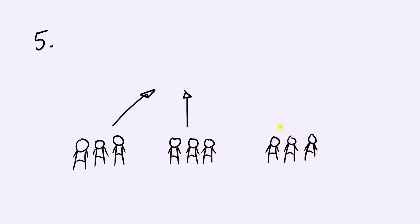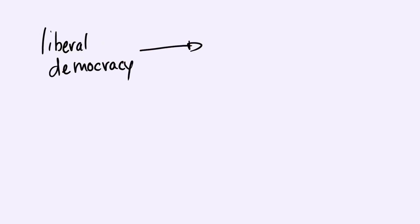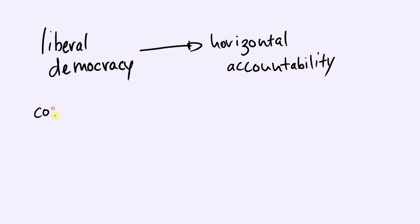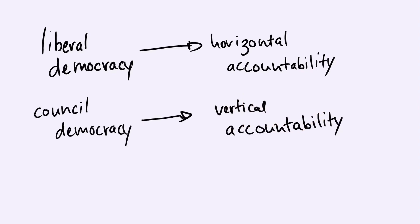This system drastically redefines the democratic process in comparison to its liberal counterpart. Liberal democracies rely heavily on what is known as horizontal accountability, which is what most Americans might understand as a checks and balances system and a separation of powers. Indeed, council democracy abandons horizontal accountability by eliminating the separation of powers — the ability of distinct branches of government to hold each other accountable. At face value, this might seem alarming, but let us consider what council democracy does to account for this loss.